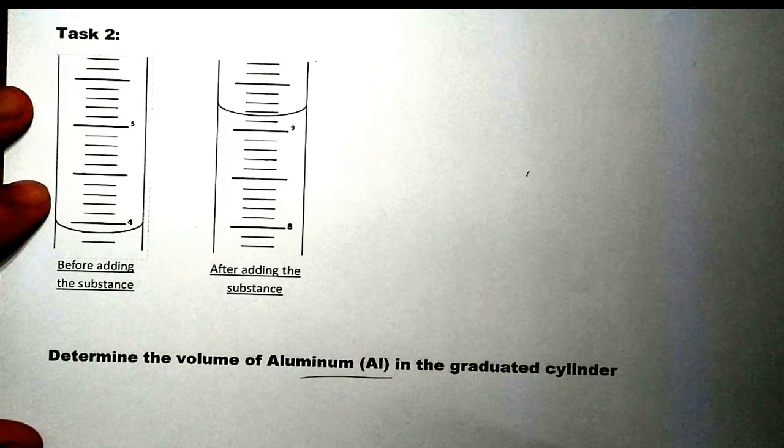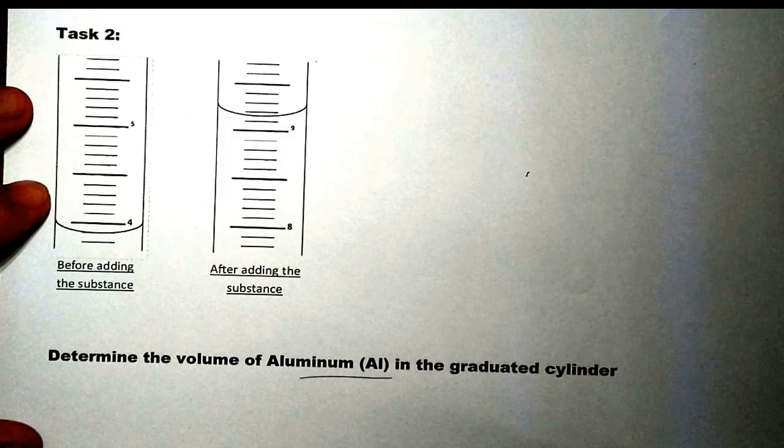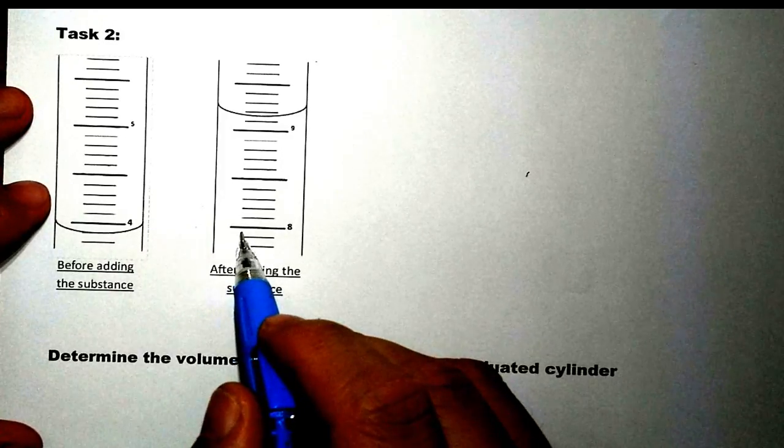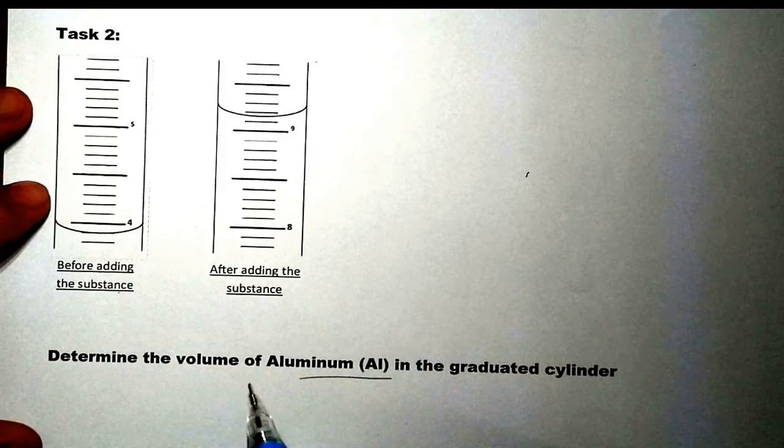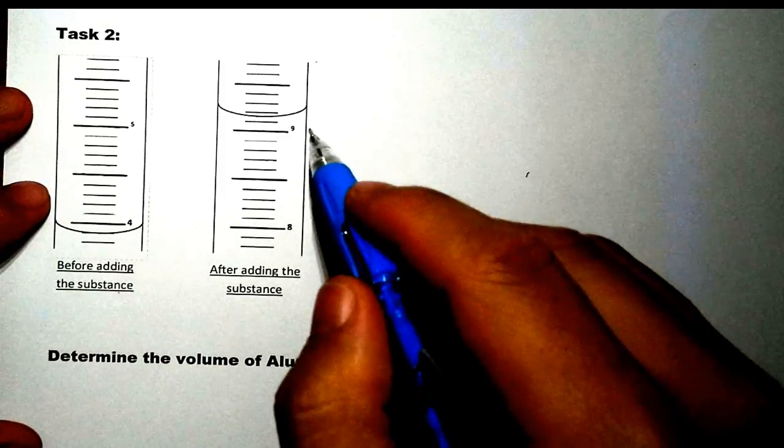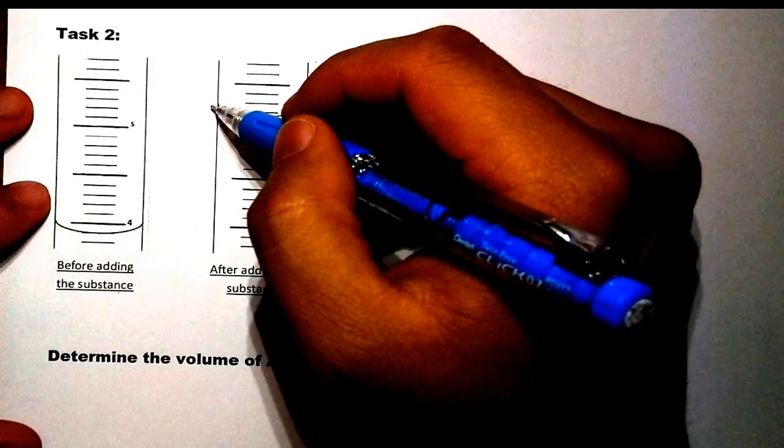And that's all we have to do for this type of problem. Let's try another problem again. Determine the volume of aluminum in the graduated cylinder. So we have two graduated cylinders again, before adding the substance, which is aluminum, and after we add it, we have a change in the reading level.